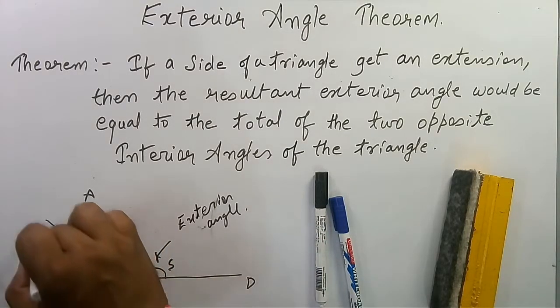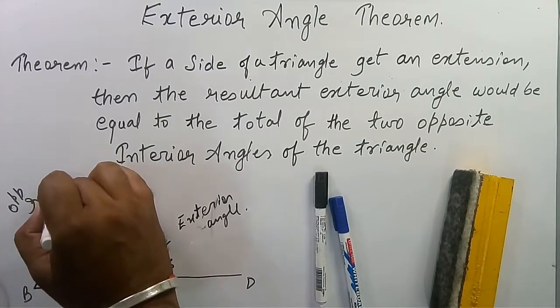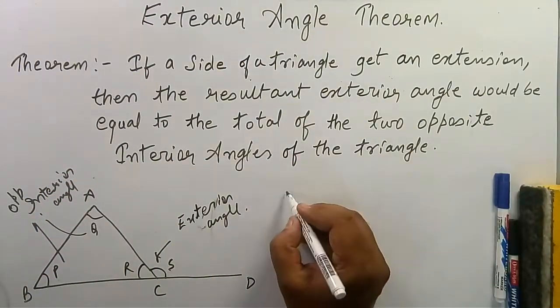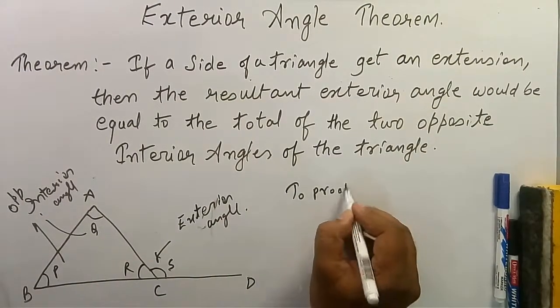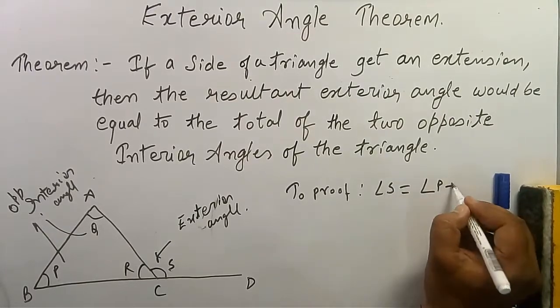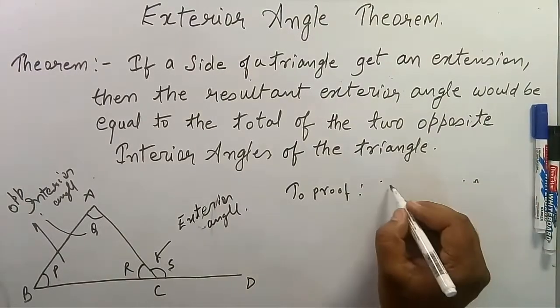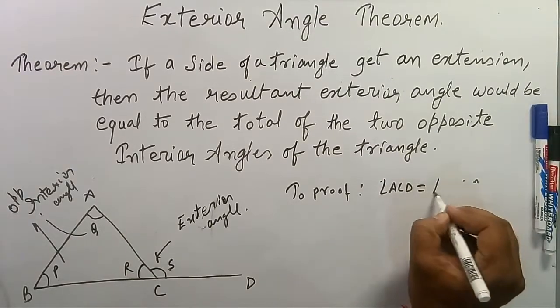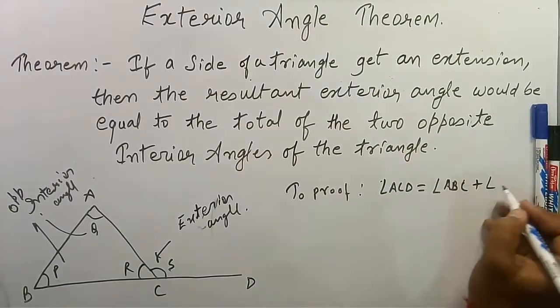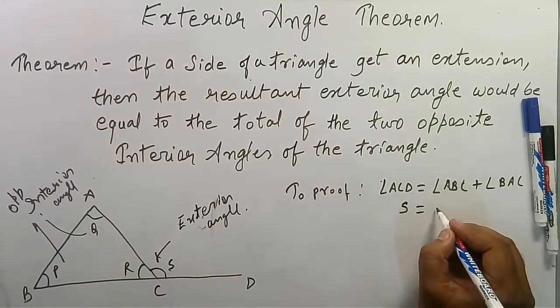According to this theorem, we need to prove that angle S equals angle P plus angle Q. Which means angle ACD equals angle ABC plus angle BAC. In other words, S = P + Q.